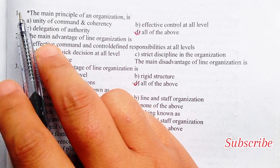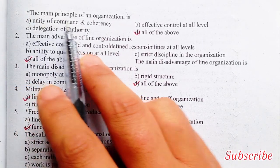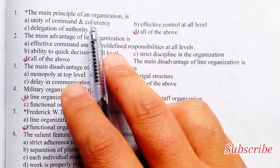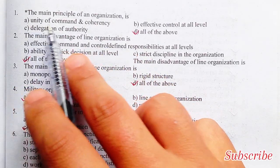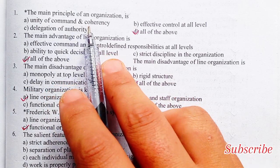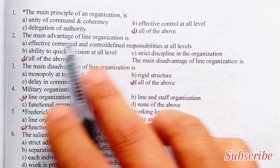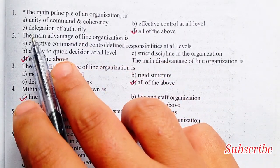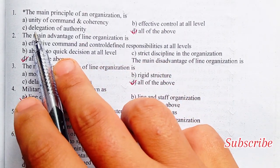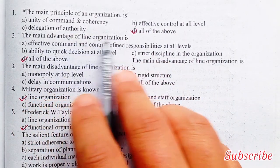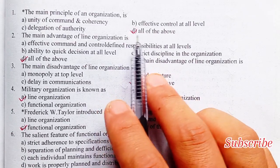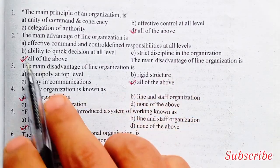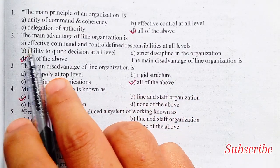The main principle of an organization is: unity of command and coherency, effective control at all levels, delegation of authority, all of the above.